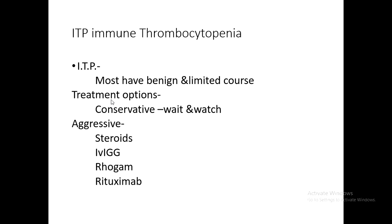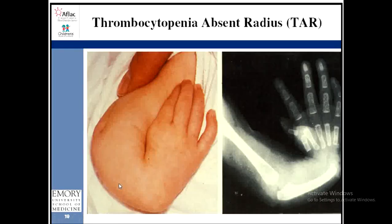For treatment of acute ITP, steroids or prednisolone are effective, but intravenous immunoglobulin G is very effective and is the first choice. IV immunoglobulin can improve platelet counts within hours to one or two days, relieving bleeding manifestations secondary to thrombocytopenia. In resistant cases, anti-D immunoglobulin (RhoGAM) or monoclonal antibodies are also indicated. This is the appearance of a patient with thrombocytopenia with absent radius — TAR syndrome — where only one bone is visible in the forearm instead of the normal two.